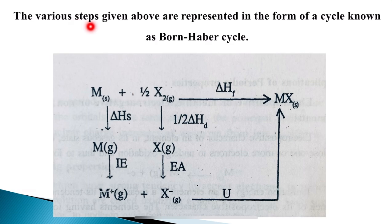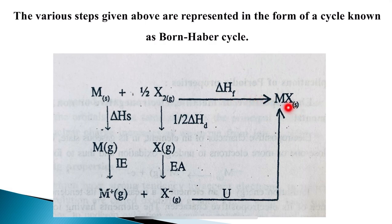The various steps explained above can be represented in the form of a cycle known as the Born-Haber cycle. Every step — heat of formation, sublimation energy, ionization energy, half of the dissociation energy of X₂, electron affinity, and finally lattice energy — is clearly represented in this cycle. During the formation through all these steps, energy is released or absorbed, and all constituently forms the final product.